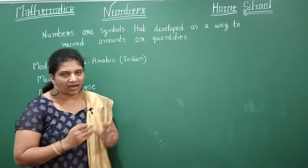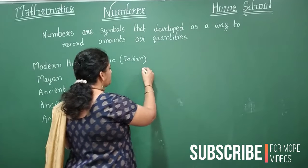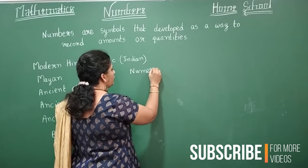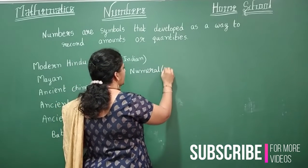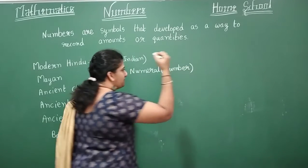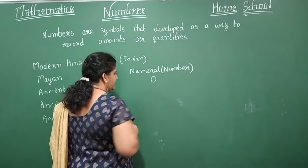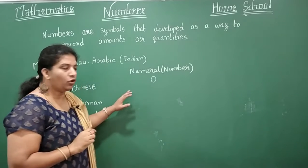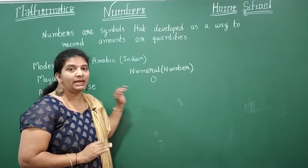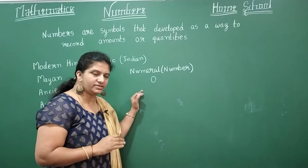We use 10 symbols to represent our numbers. A number is also called a numeral. What are the 10 symbols? The first one is 0. No number will start with a 0. Zero is also called a placeholder.